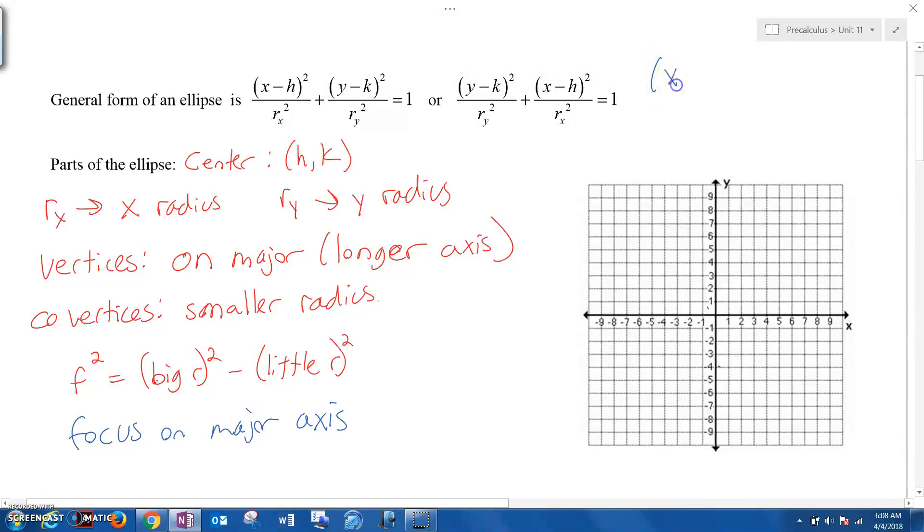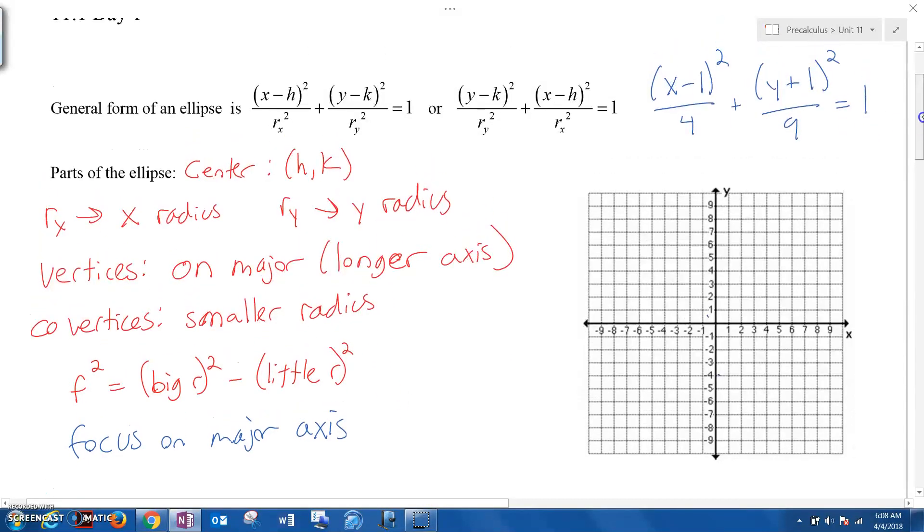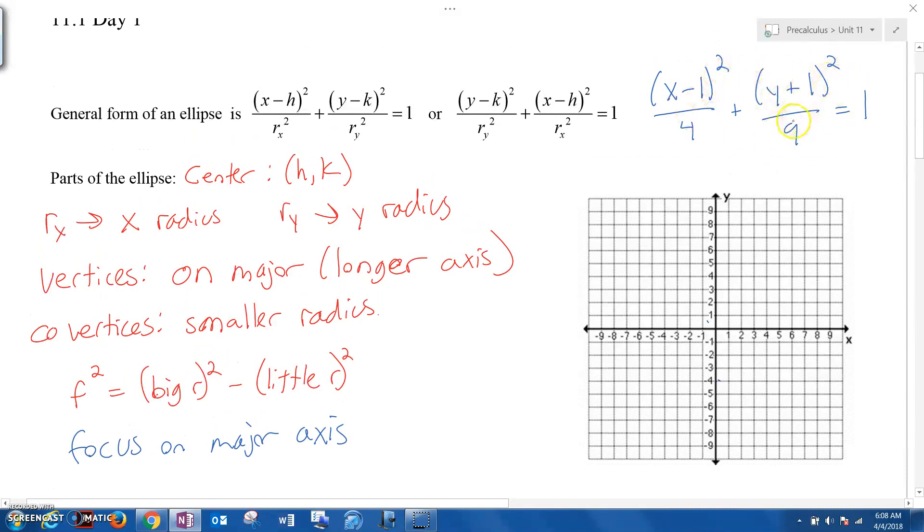So my example for today is going to be (x-1)² over 4 plus (y+1)² over 9 equals 1. I'm going to go through all these things with this example. So while it's still on the screen, I have x squared, I have this format. So right away, because of the circle stuff, you should note that the center is at (1, -1). So that's right there.